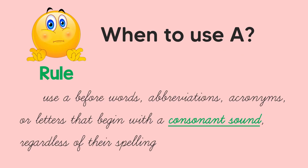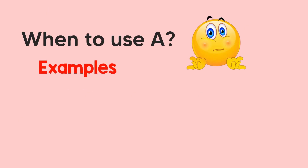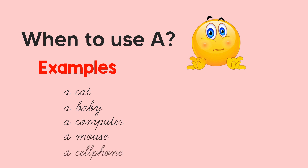When do we use A? We will use A before words, abbreviations, acronyms, or letters that begin with a consonant sound, regardless of their spelling. When we say consonant sound, it means any sound except the vowel sounds. For example: a cat — 'cat' begins with 'kuh'; a baby — 'baby' begins with 'buh'; a computer — begins with 'kuh'; a mouse — begins with 'mhm'; a cell phone — begins with 'sss.' These words all begin with consonant sounds.